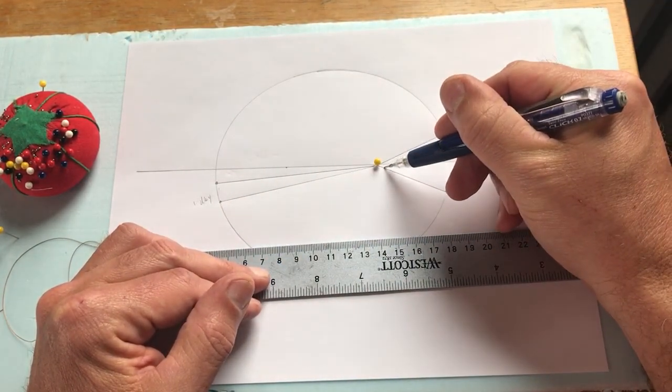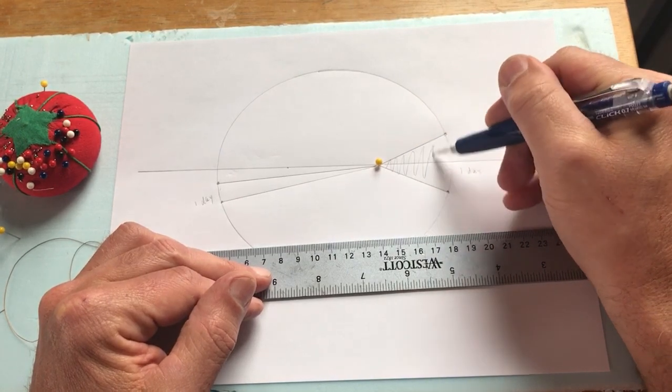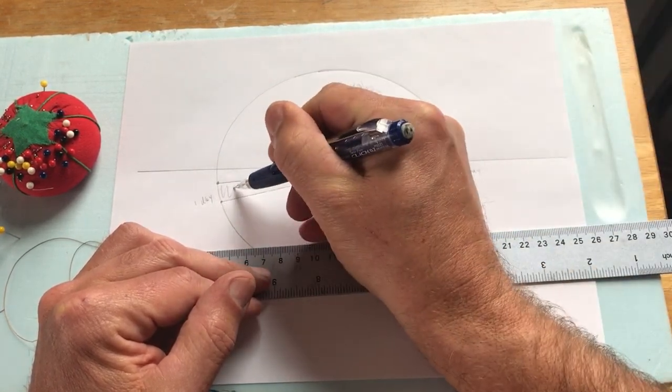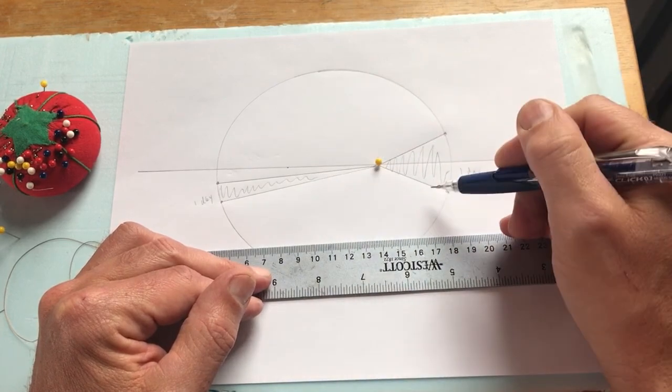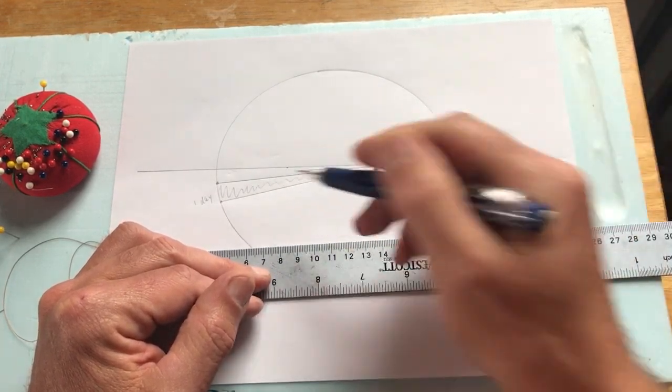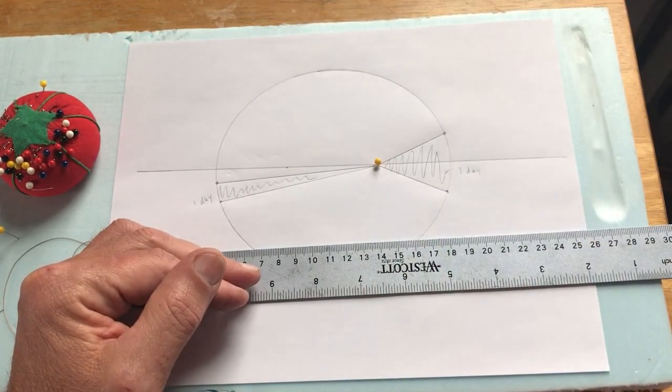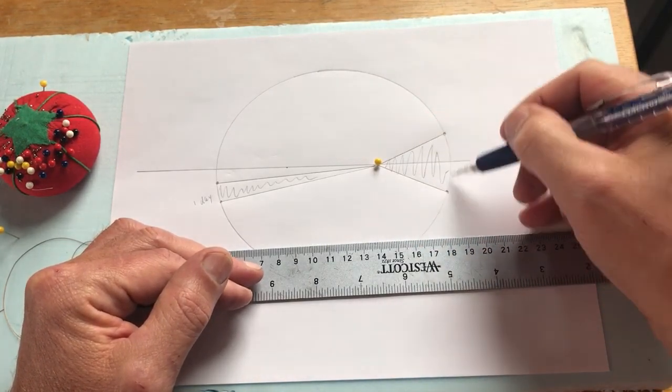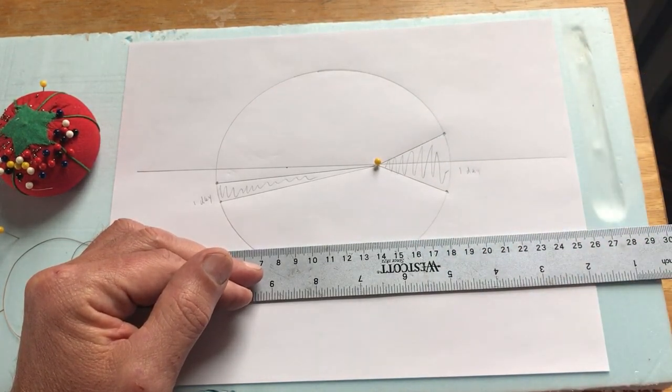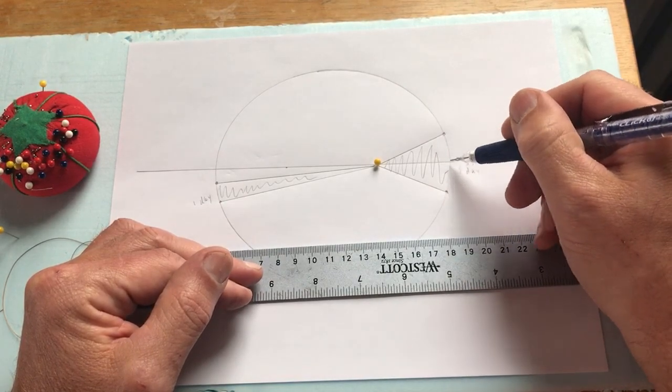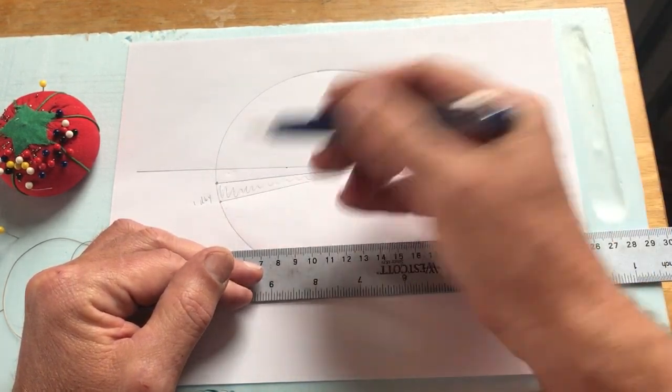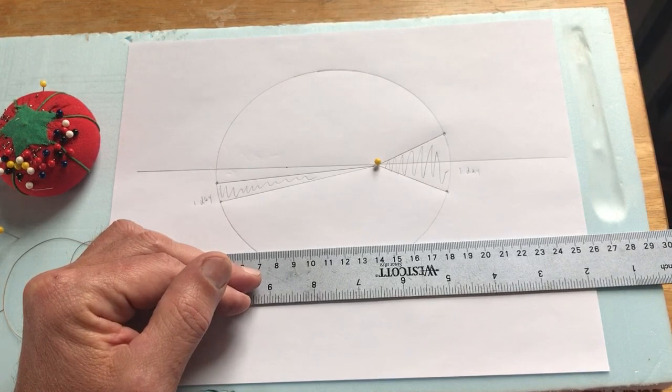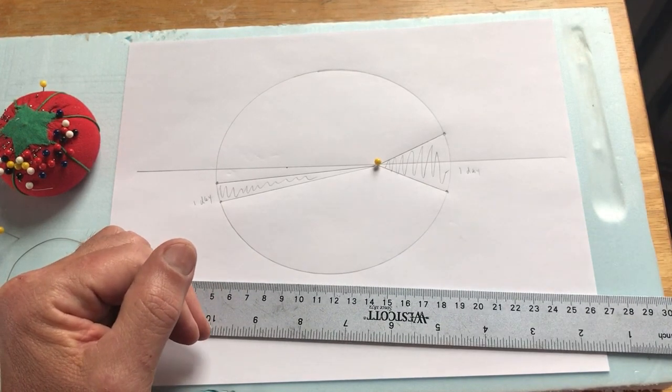And what Kepler found out is that this area is the same as this area. If we were to measure that surface area, those two would be identical. The way he said it is that the path of the orbiting body sweeps out the same amount of area in the same amount of time, no matter where it is moving around that ellipse.